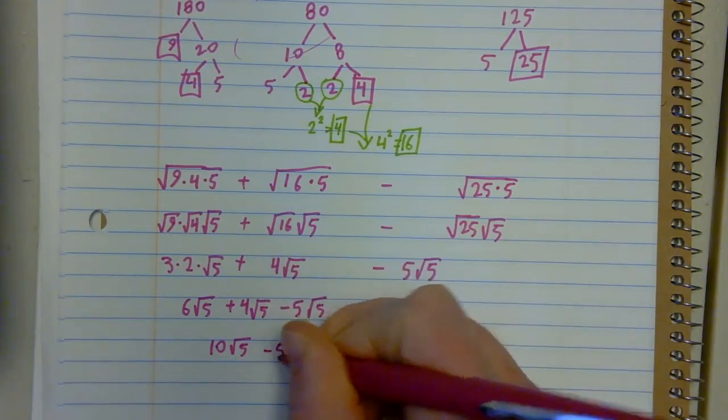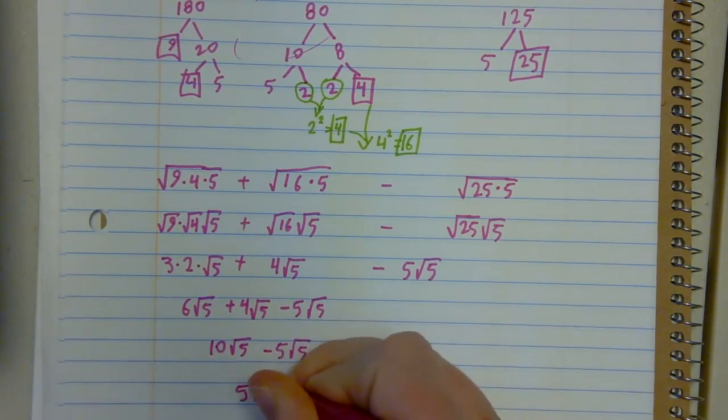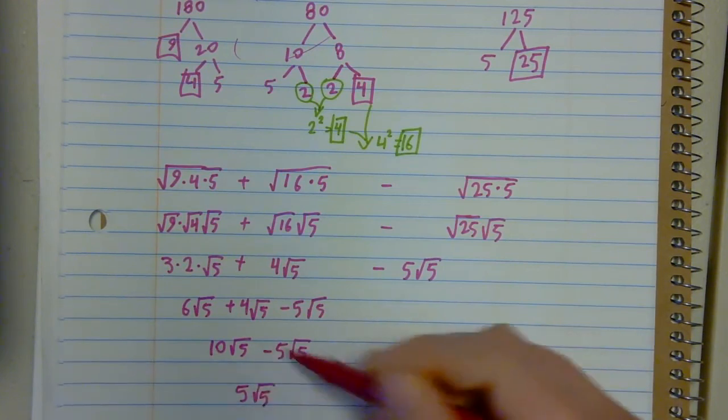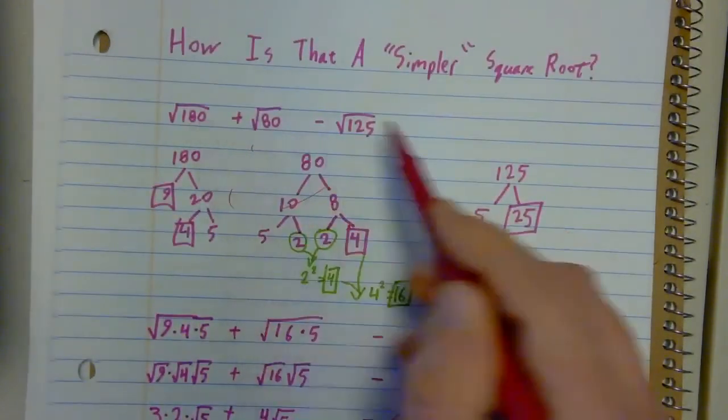Then I need to take away 5 of my root 5's. If I have 10 root 5's and I take 5 away, I have 5 root 5's left. And this is certainly a simpler thing to deal with than this was.